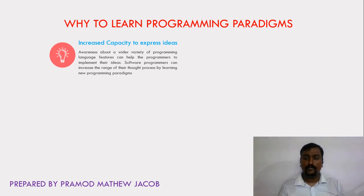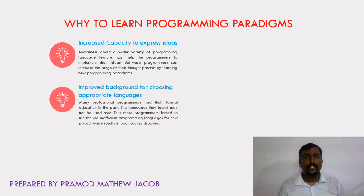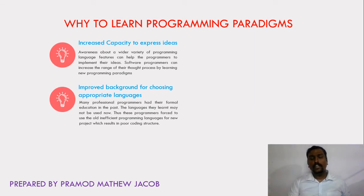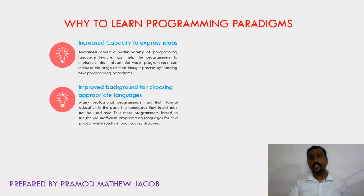The next advantage is improved background for choosing appropriate languages. Many professional programmers had their formal education in the past, and the languages they learned at graduation level may not be used now. For example, if a programmer has learned only C and Pascal, he may not be aware of the powerful features of Java, Python, etc. So he will always try to develop projects using C or Pascal, which is a main reason for poor coding structure in various organizations. A programmer has to update his knowledge in new programming paradigms and languages.